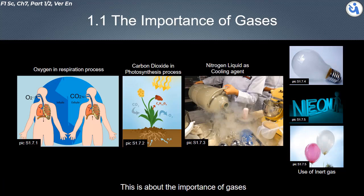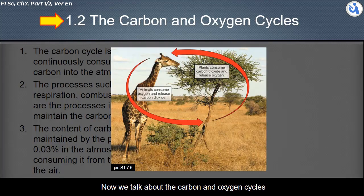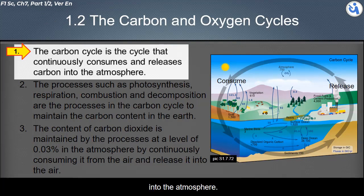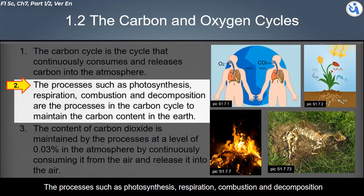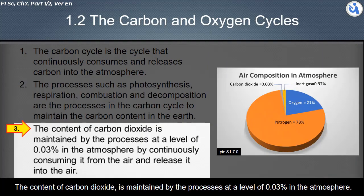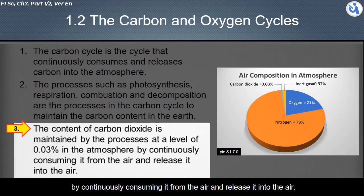Radon gas is radioactive and is used to treat cancer. Now we discuss the carbon and oxygen cycles. The carbon cycle continuously consumes and releases carbon into the atmosphere. Processes such as photosynthesis, respiration, combustion, and decomposition maintain the carbon content on Earth, keeping carbon dioxide at a level of 0.03% in the atmosphere.